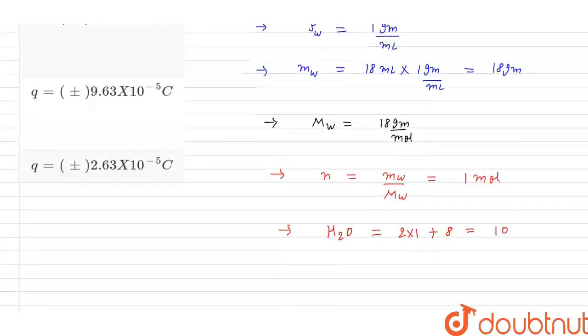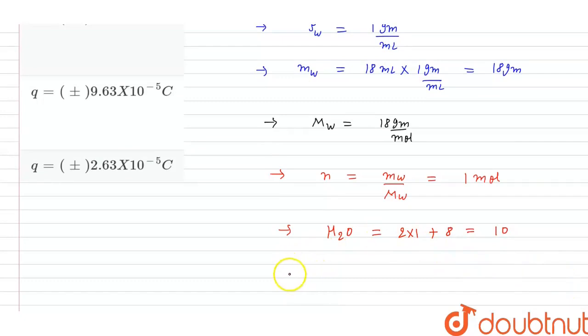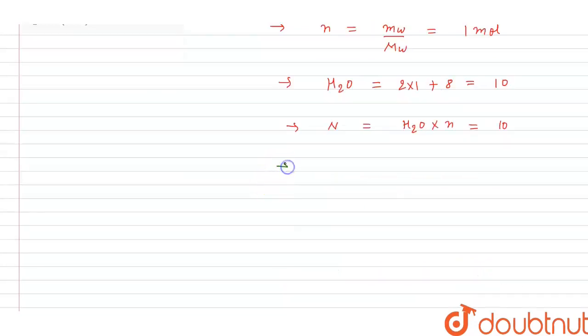So number of moles of electrons in 1 mol of water, taking capital N, is equal to H2O into small n. So number of moles which is equal to 10.